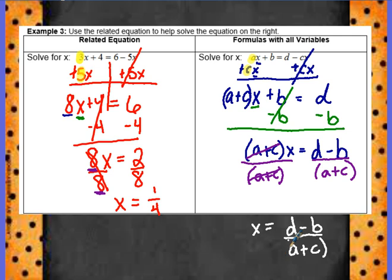You can keep this in parentheses if you'd like. So, here we have it — x is all alone. Those are three examples of solving an equation with variables for a specified variable that we need to get alone.